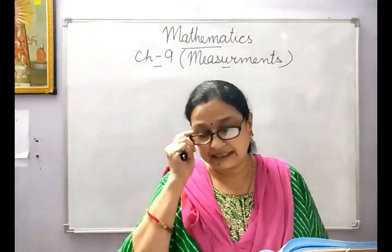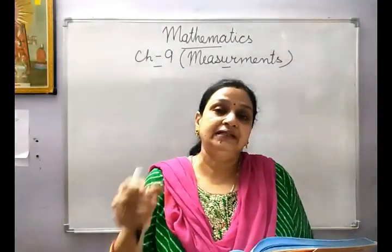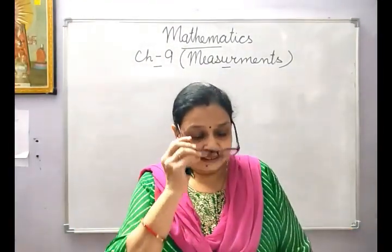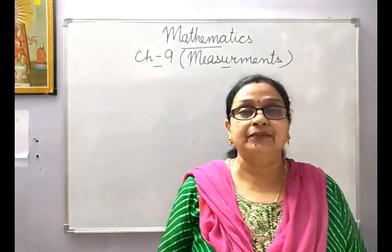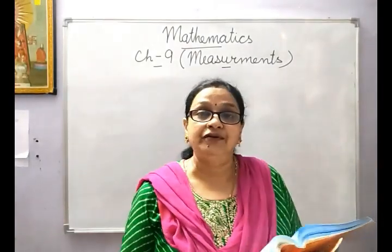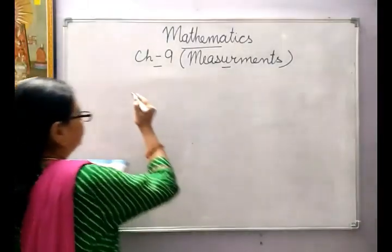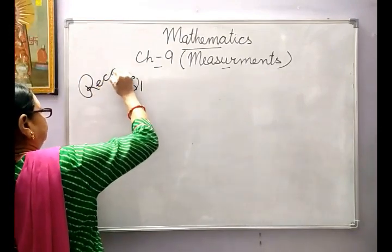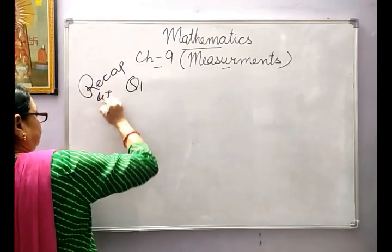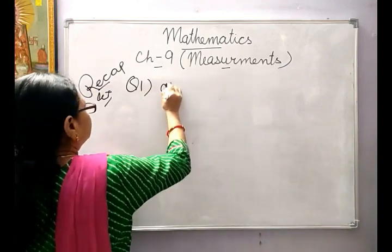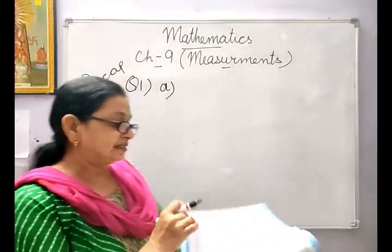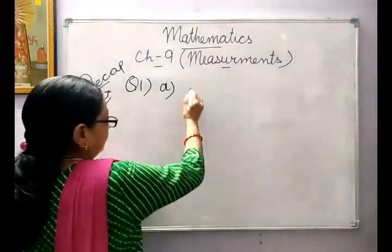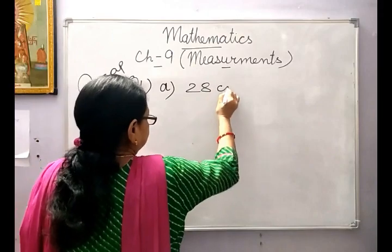Children, always remember — read the sentence carefully and see whether the things are small or big, and then you can answer. The length of the sheet of paper is about 28. It will be centimetre. A1: a sheet of paper — the length will be in centimetre, so it will be 28 centimetres.